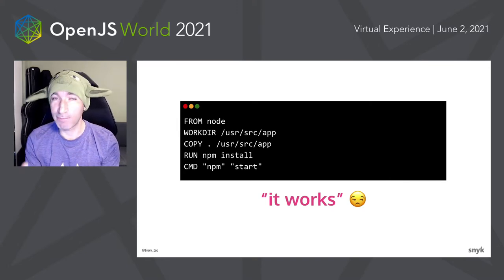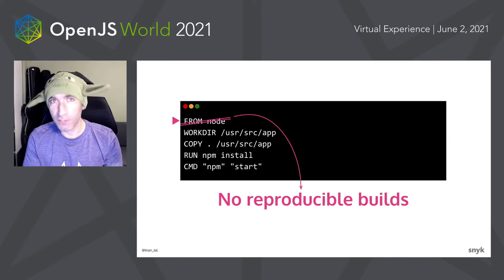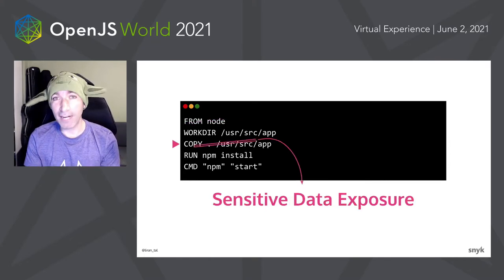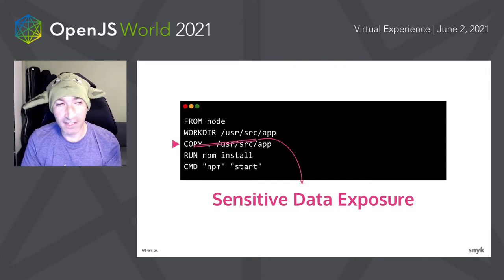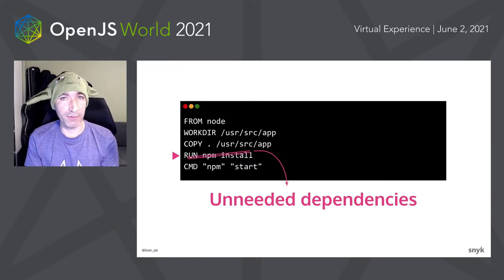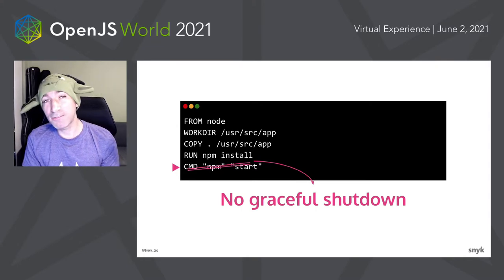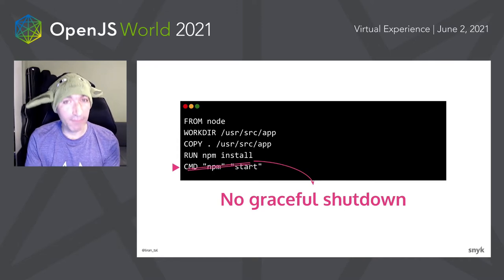You want to avoid anything that looks like this. We're going to dissect every single line, starting from 'FROM node' — that means no reproducible builds because you're pulling the latest image. You're copying potentially sensitive files because you're copying everything — config files, environment files you wouldn't need in the Docker image. There are unneeded dependencies from npm install, and the command to spawn the Node.js runtime is incorrect usage that may result in your application not having proper graceful shutdown, especially in orchestration environments like Kubernetes or Swarm.